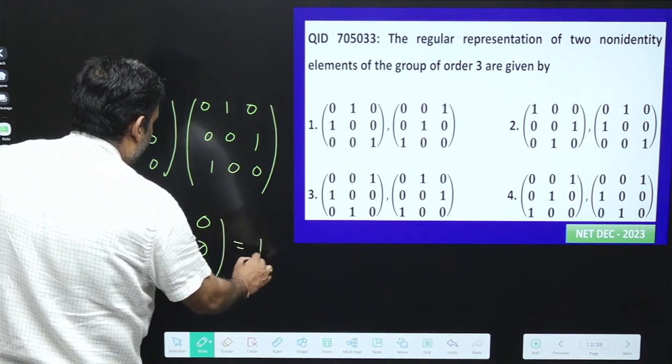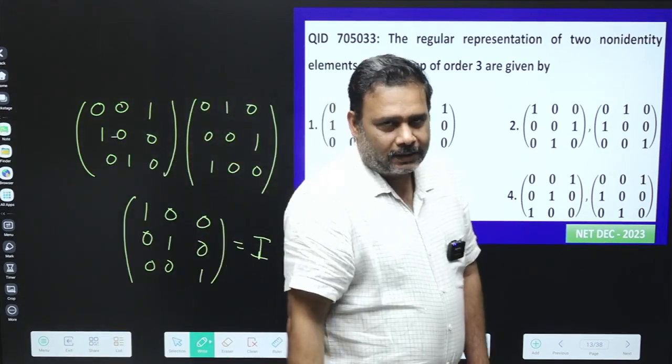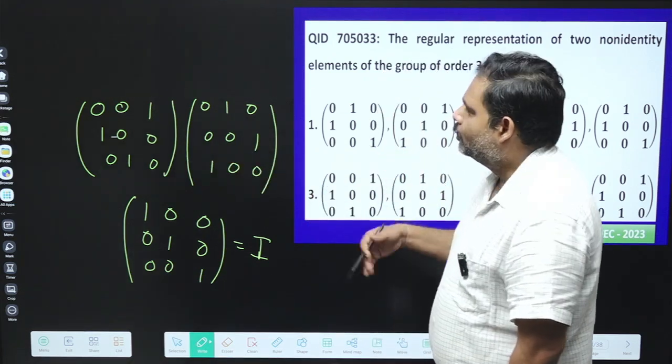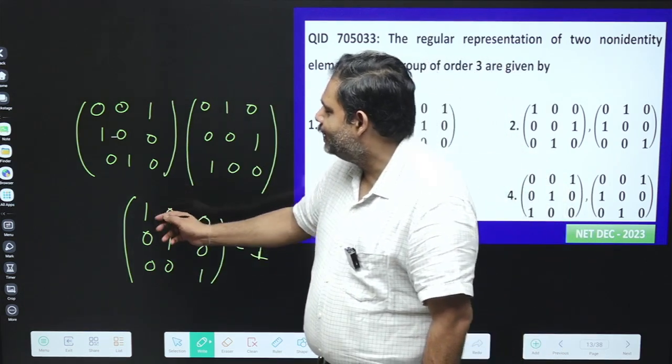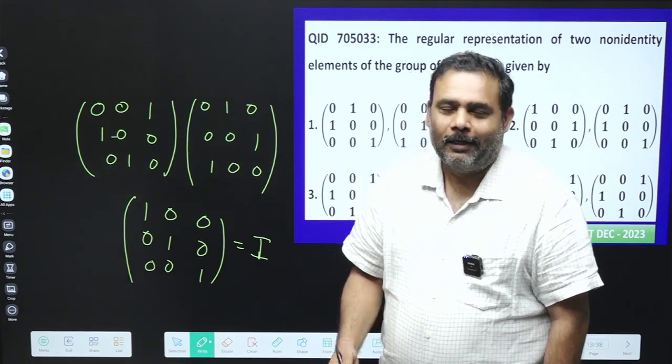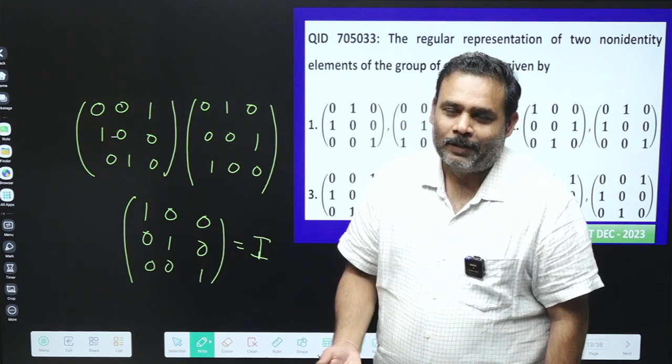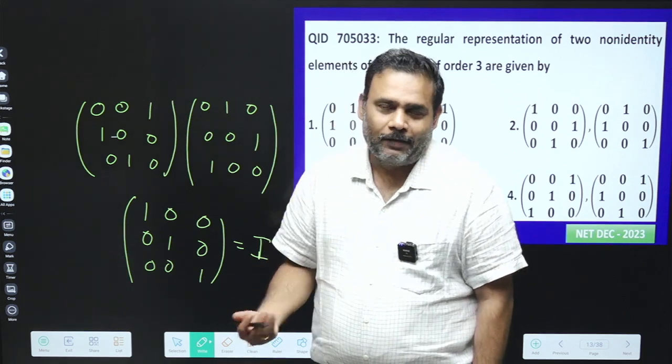So yes, this is the identity element. So you can see that option number 3 is correct. But you have to just multiply all these options. So don't multiply completely in the examination. You have to just check that the first element is 1 or not. If it is not 1, then obviously this is not going to be identity.